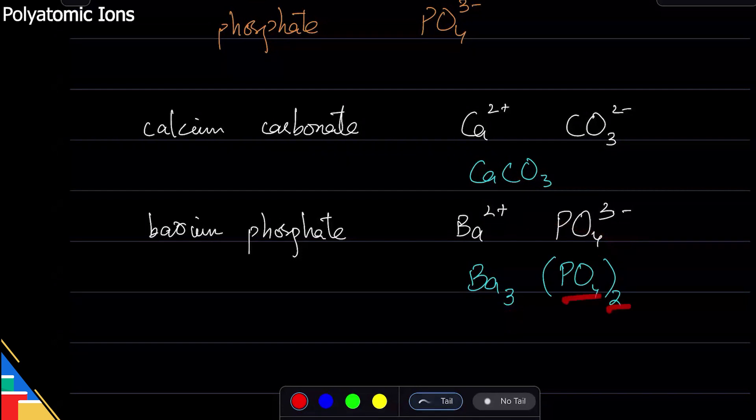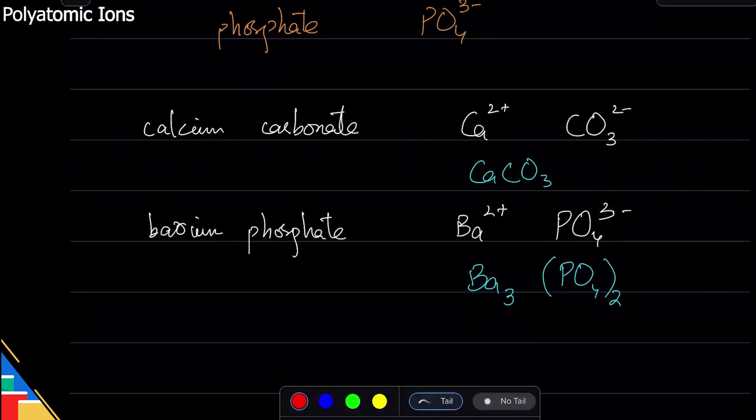Why? Because if I have three barium and one of them has plus two charge, total charge will be three times two equals plus six. And if I have two phosphate and one has negative three charge, the charge will be two times minus three equals minus six. So plus six here, minus six here, overall zero.